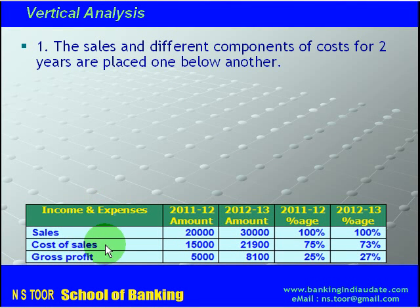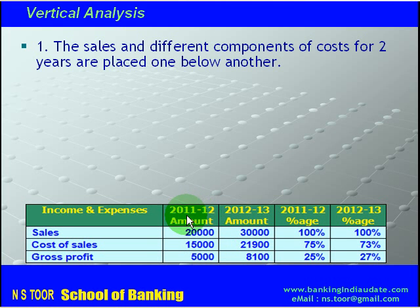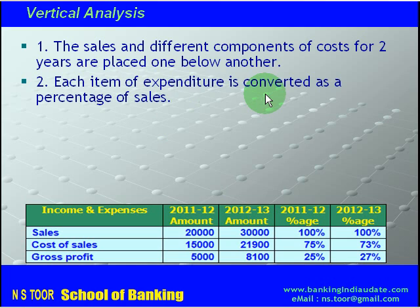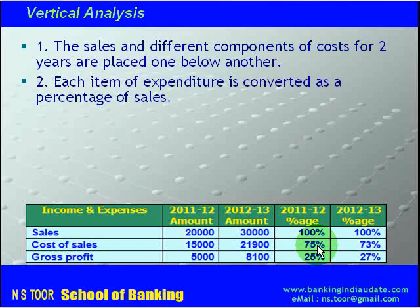We have sales and components of cost placed one after another for different years — this is for year 11-12 and this is for year 12-13. Thereafter, each item of expenditure is converted as a percentage of sales, like we have converted it here.